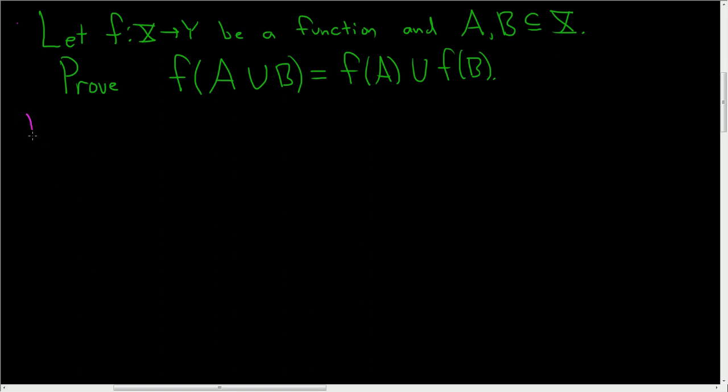Before we begin the proof, let's talk a little bit about the notation involved. So F of A, this is called the direct image of A under F, or just simply direct image.